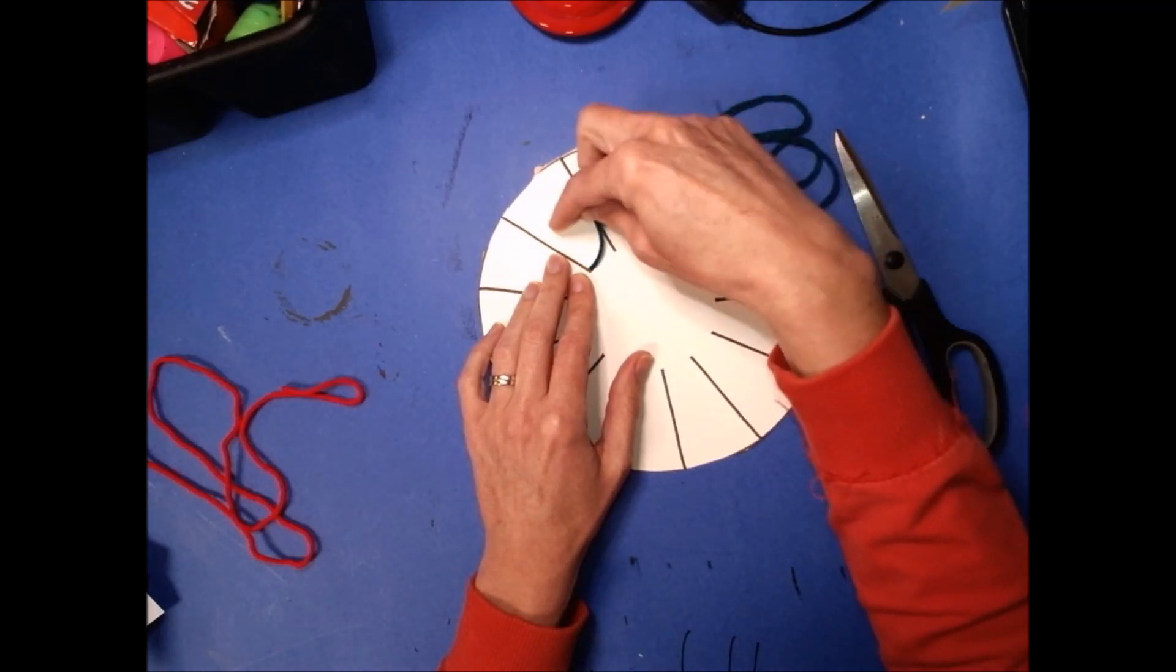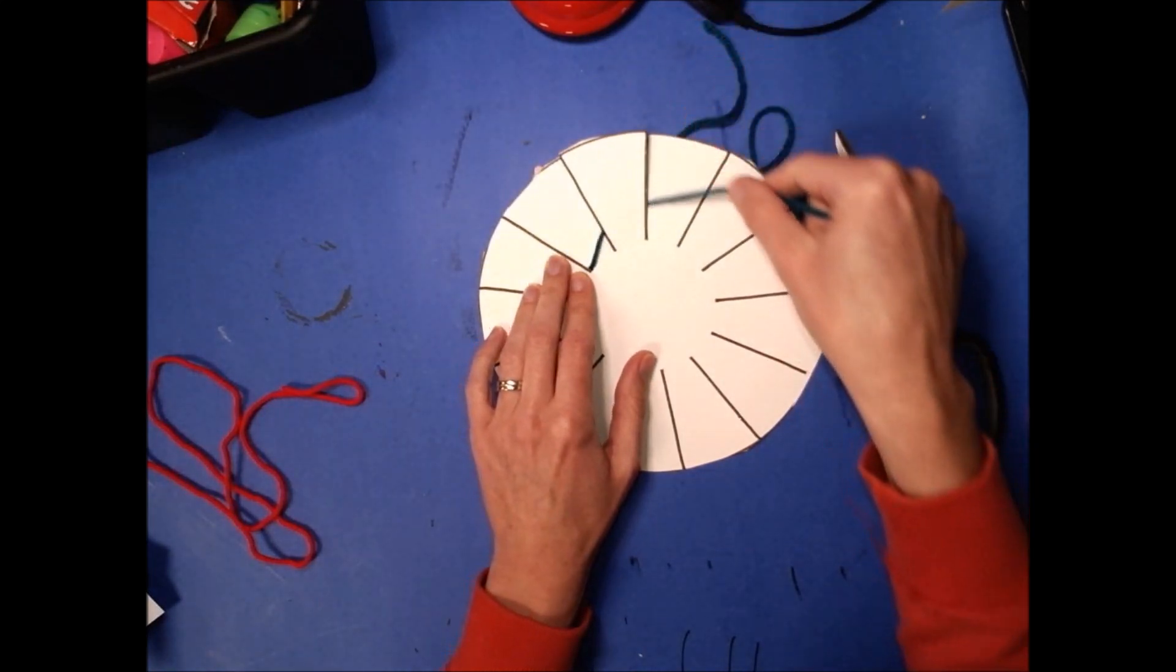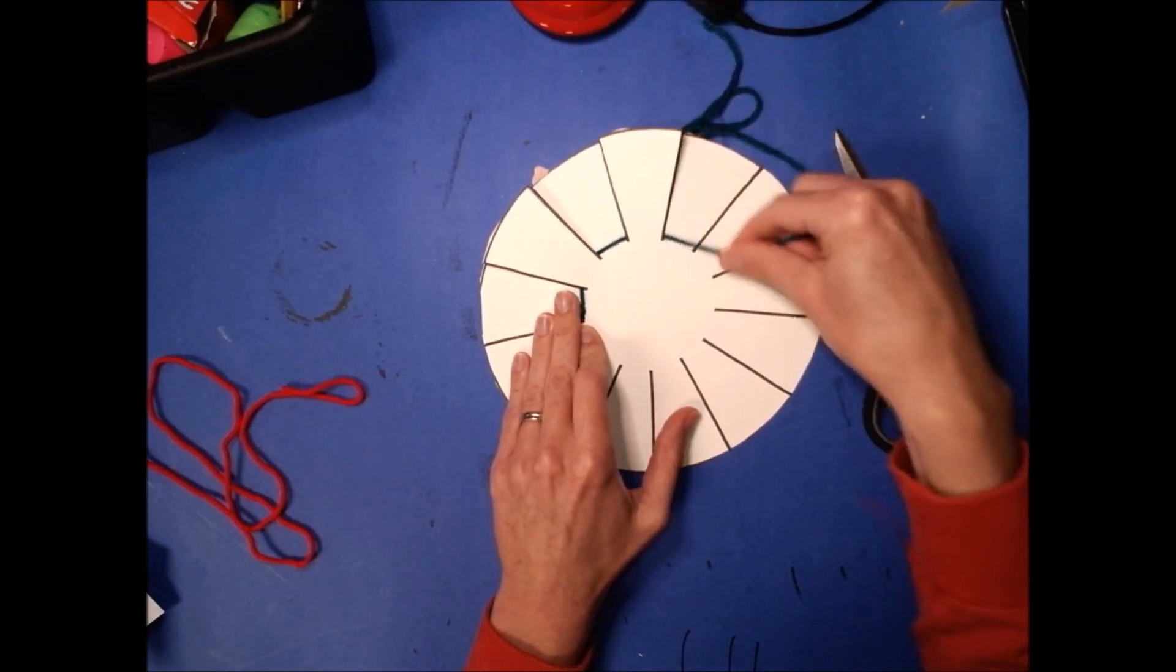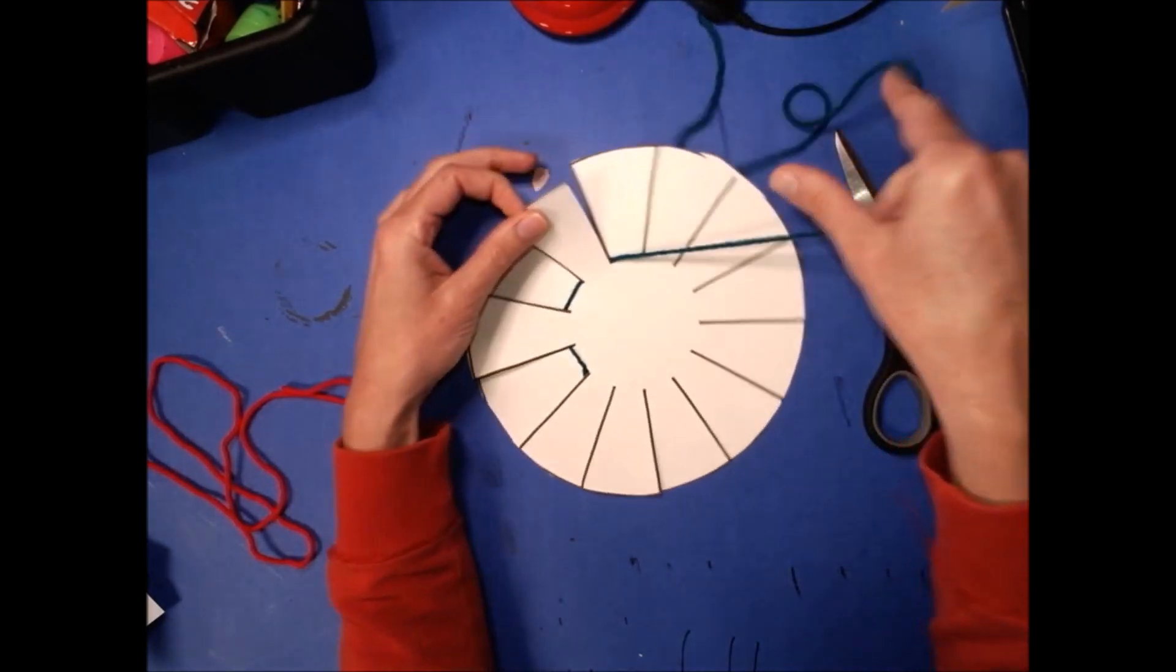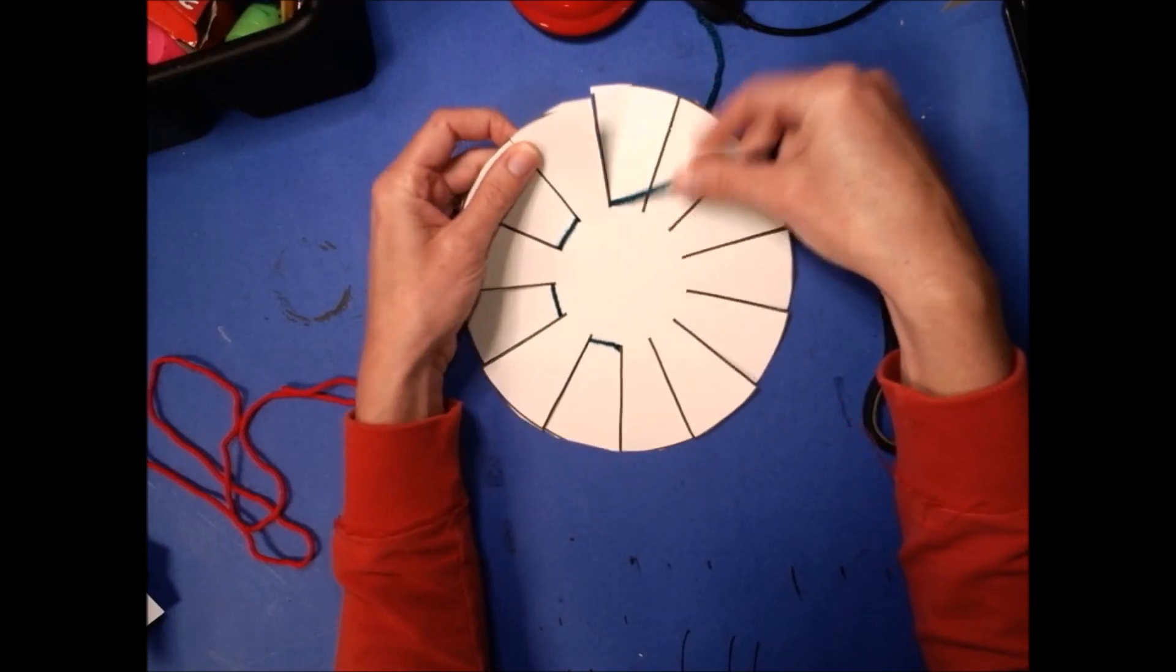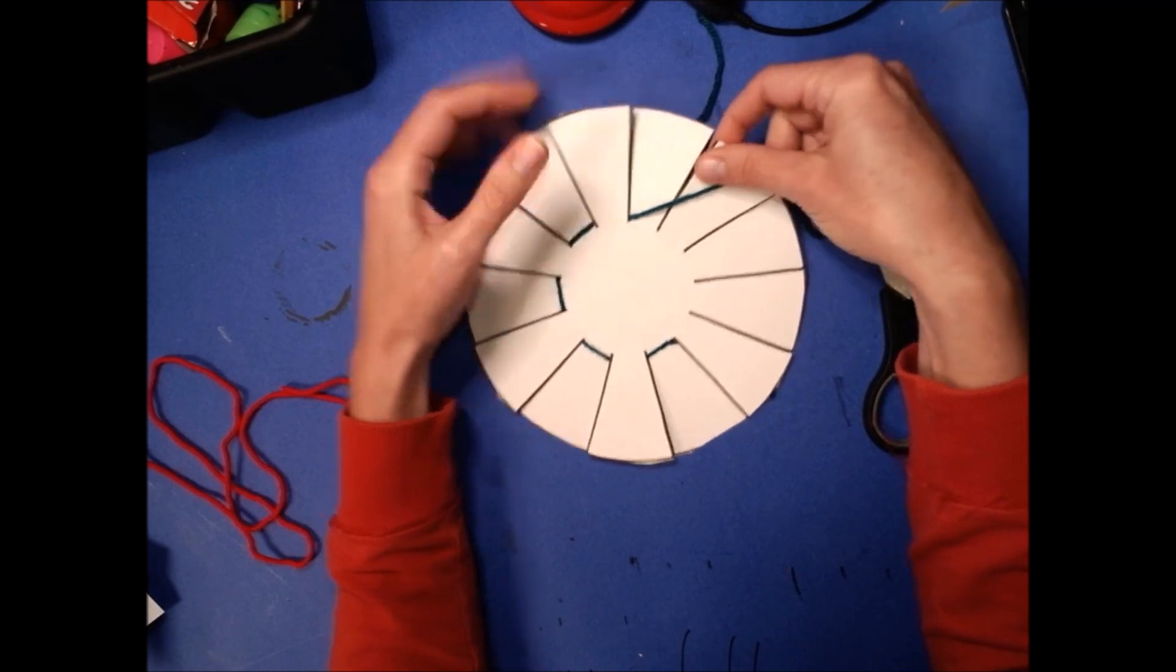And I'm gonna go over one flap and then under the next, and then over one and then under the next. Once I go over and under a couple times, I don't have to hold that tail anymore. Just when you're getting started you might yank it out if you don't have a little hold on it. And I'm just gonna continue the pattern of over, under, over, under, over one, under one.